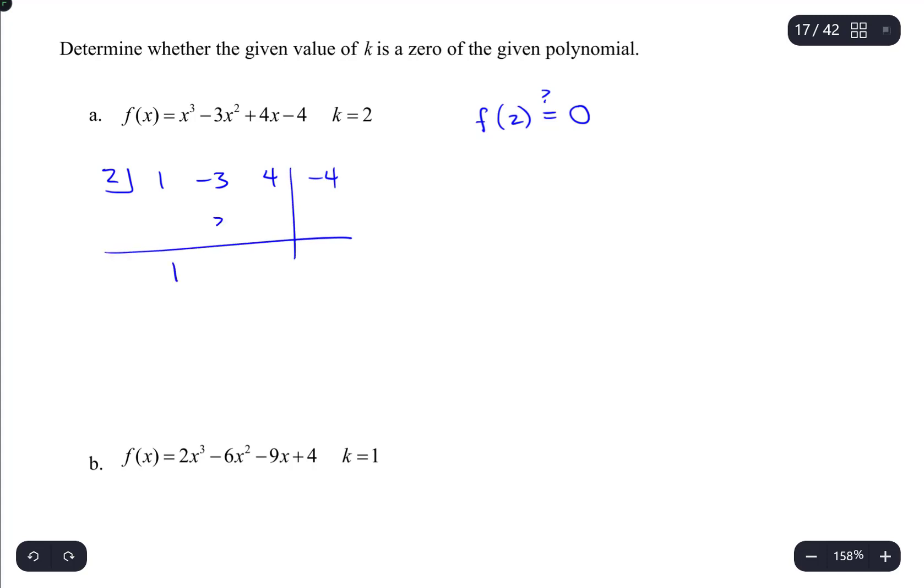Bring the 1 down. 2 times 1 is 2. That adds up to negative 1. That's negative 2. 4 minus 2 would give me 2. 2 times 2 is 4.